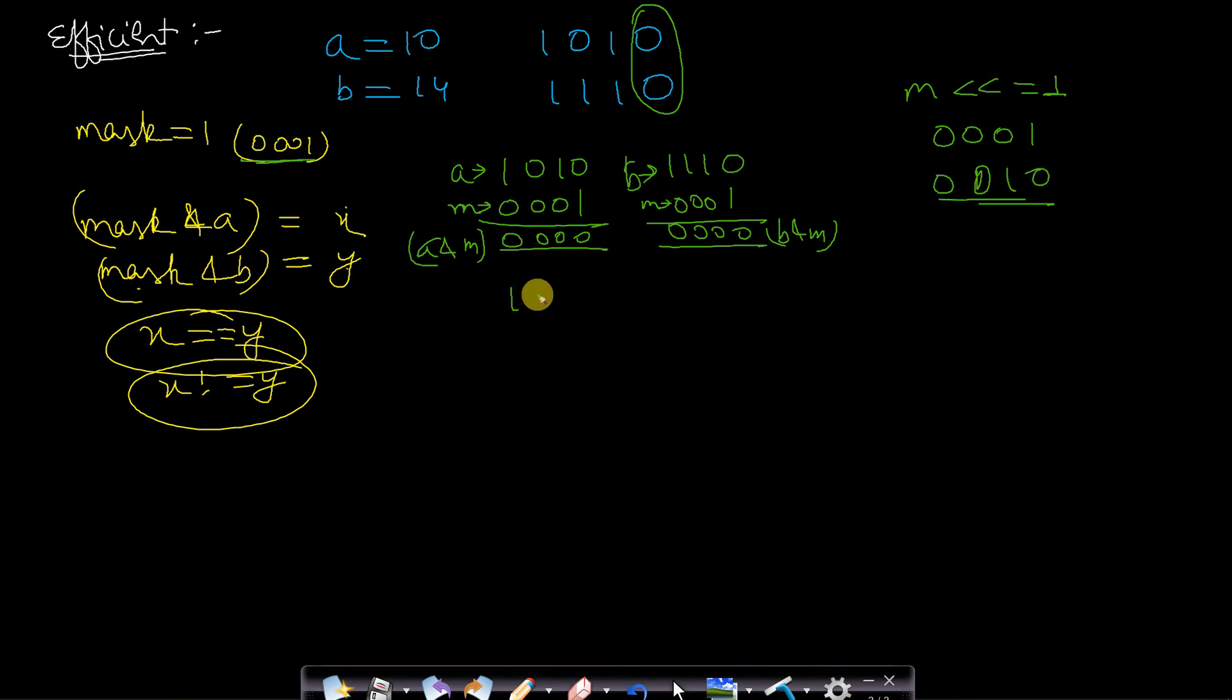We will have A value as 1010, mask value as 0010. We will find A ANDed with the mask value. It will be 0010. Now we will do the same for B. B is 1110 and mask value will be 0010. Now we will find it, it will be 0010.